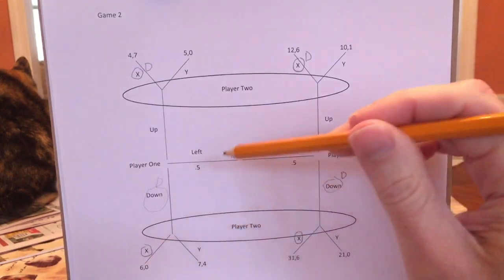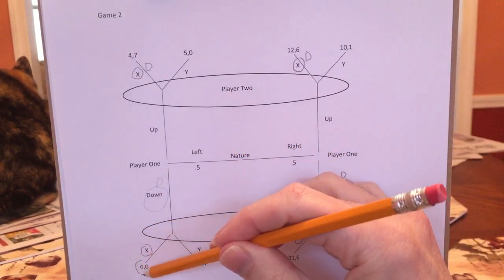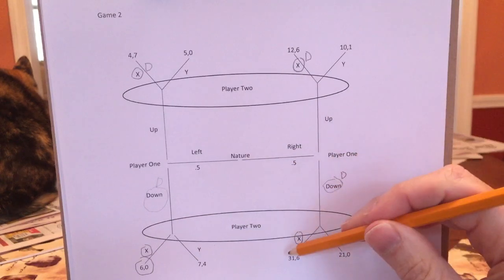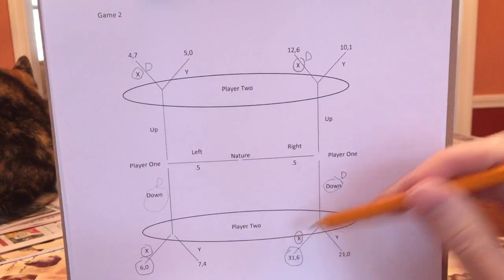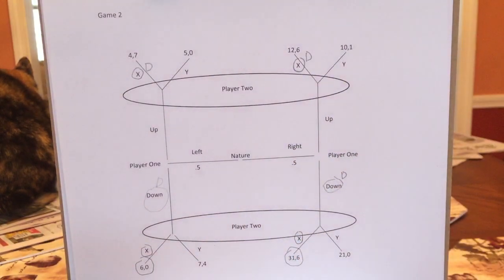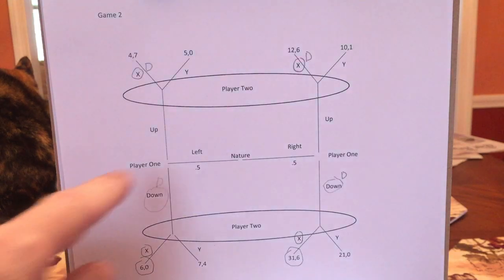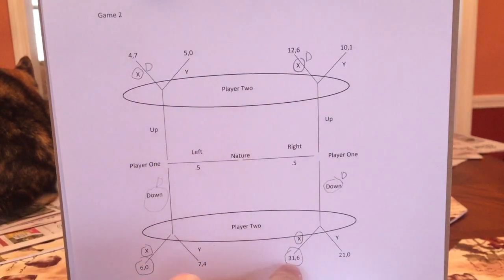And this, of course, means that if nature goes left, we end up here. And if nature goes right, we end up here. So, in this game, half the time, Player 1 will get 6. Half the time, Player 1 will get 31. Half the time, Player 2 will get 0. And half the time, Player 2 will get 6.